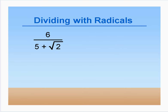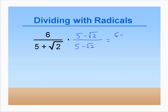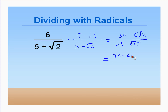Next we multiply top and bottom by (5 minus root 2). In the numerator we get 30 minus 6 root 2. In the denominator, using conjugates: 25 minus root 2 squared, which is 25 minus 2, equal to 23. So the answer is (30 minus 6 root 2) over 23. No more simplifying can be done, so this is our answer.